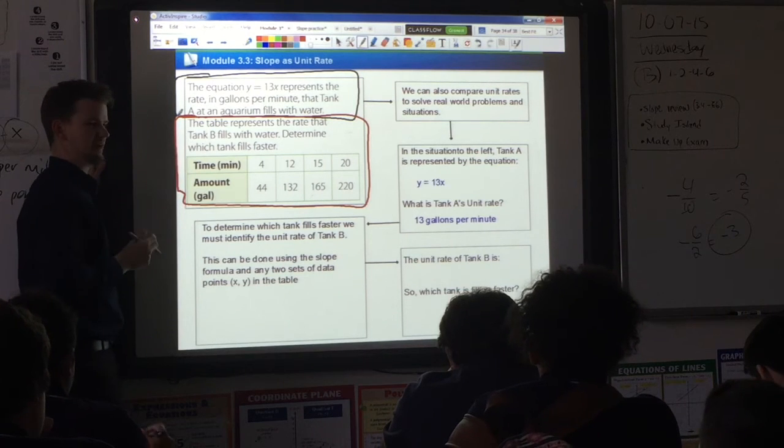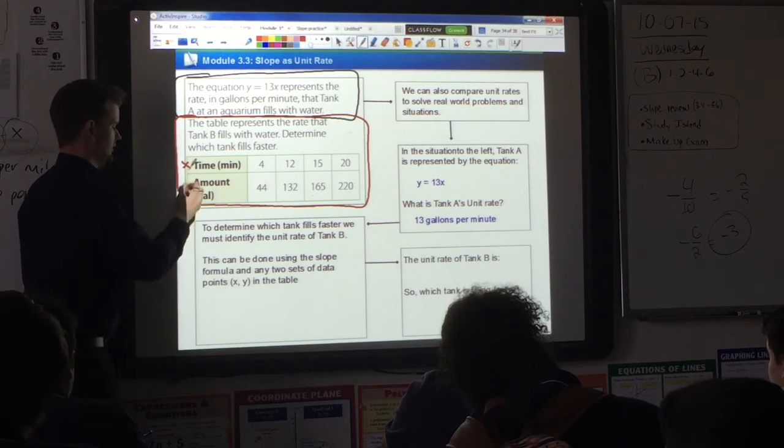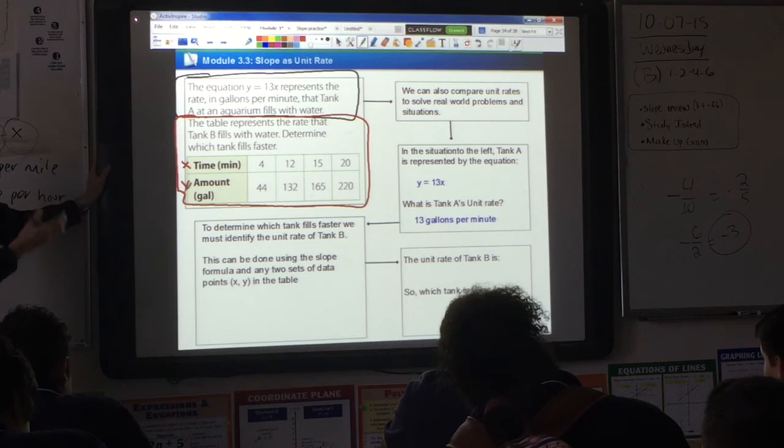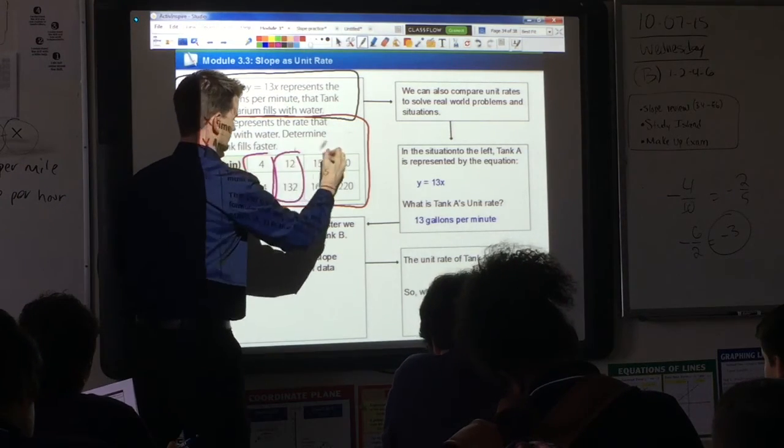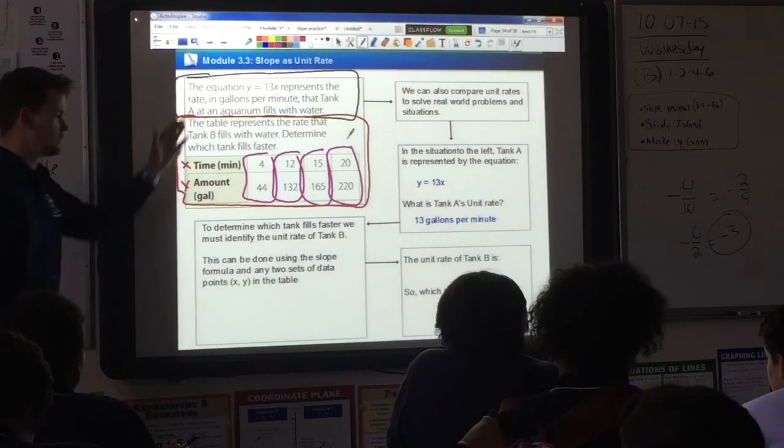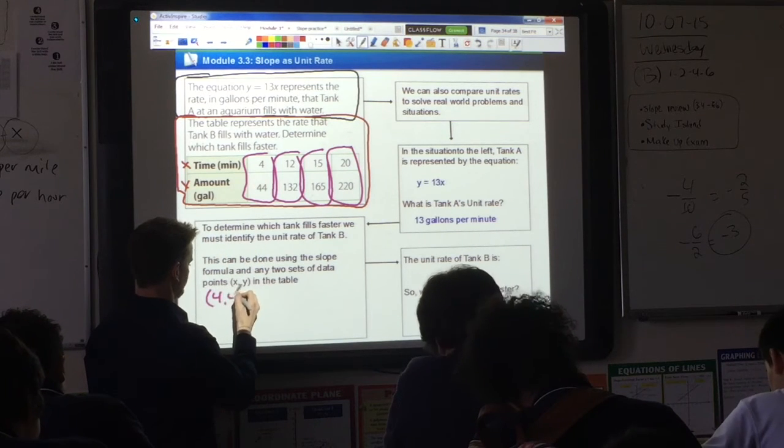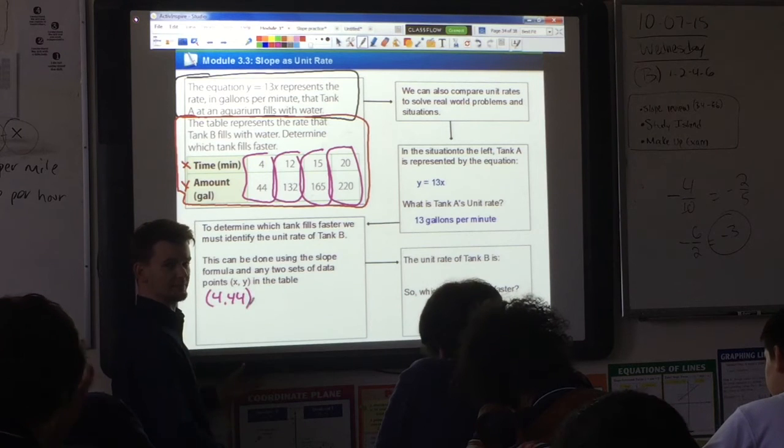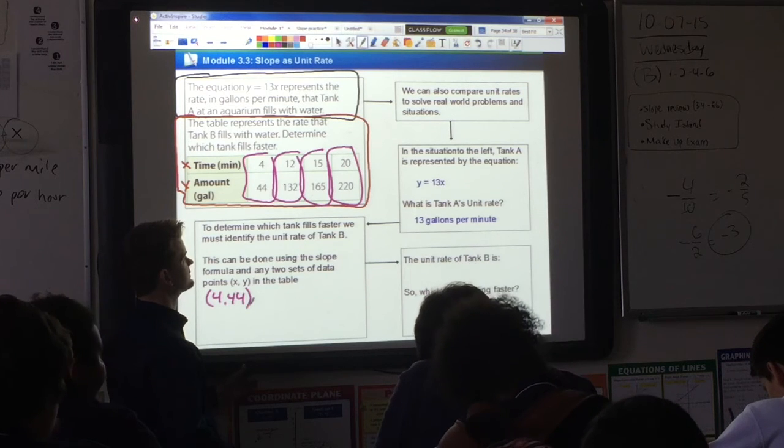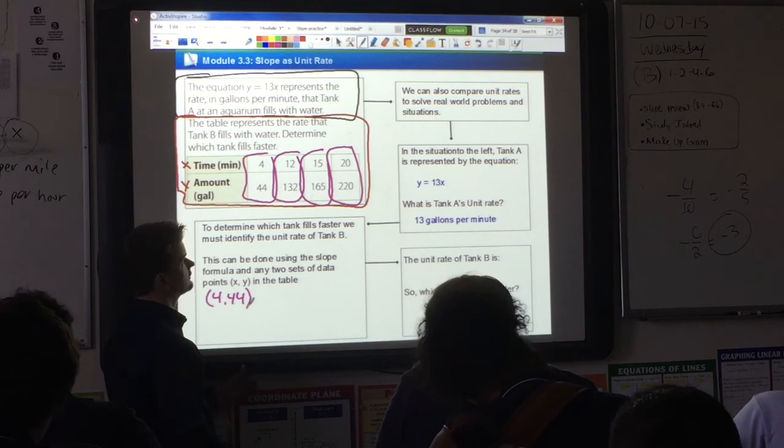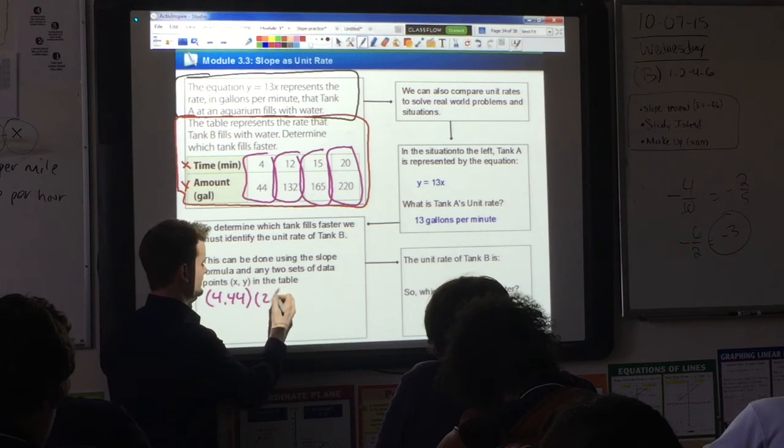What's the input? What's the output here? Minutes is my input. Gallons is my output. So minutes is the input, gallons is the output. Let's use any two sets of coordinates. Which do you want to use? 4, 44. We'll use that. It doesn't matter which two you use. You'll always get the same answer. Maria, which one of these is going to be your second? 20 and 220. So which one of those is the x value? 20. So it's going to be 20, 220.